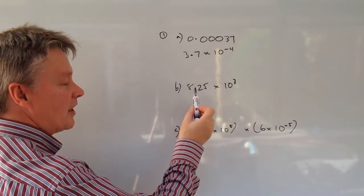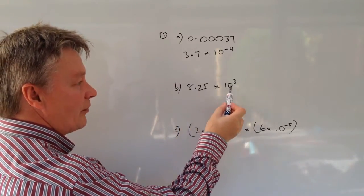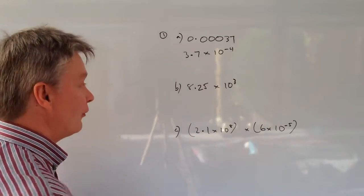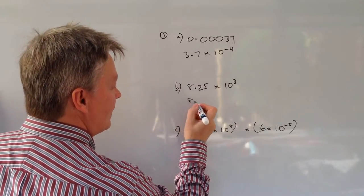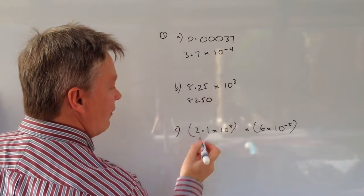Similarly we're moving the decimal point once, twice, three times because it's 10 to the power of 3. So this would be 8, 2, 5, 0.